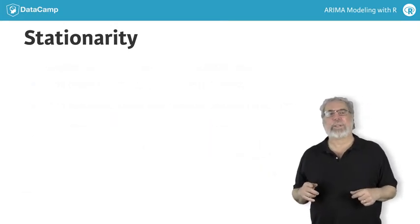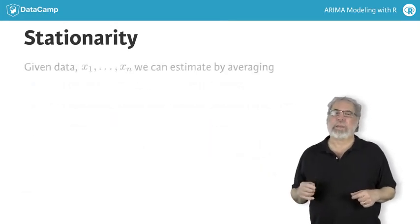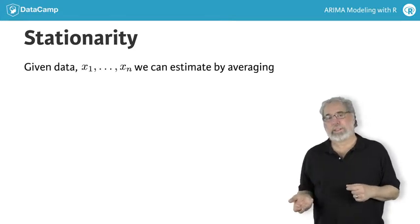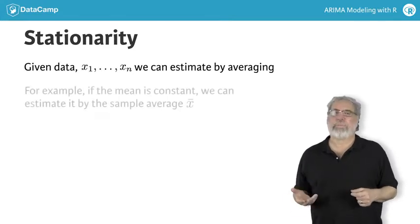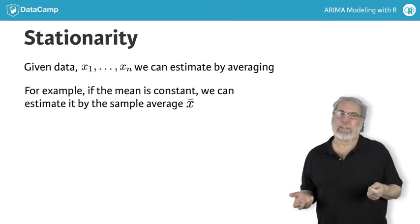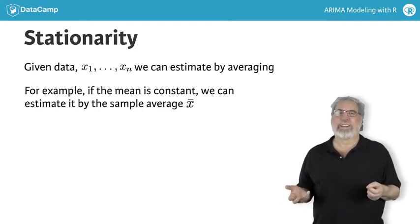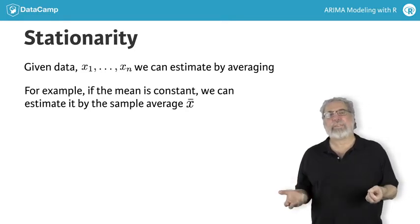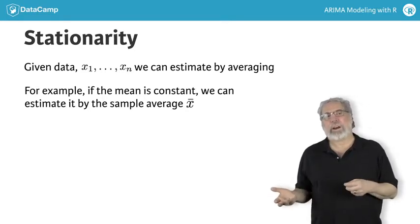Stationarity means that we can use simple averaging to estimate correlation. If the mean is constant, then you can estimate it by the sample average, x-bar.